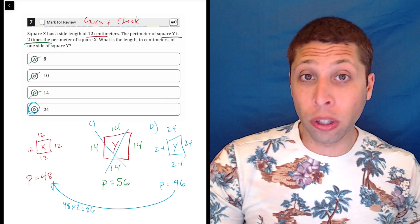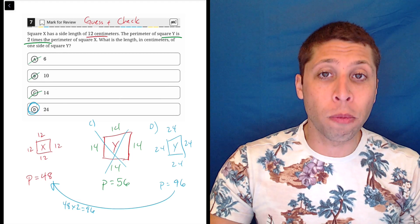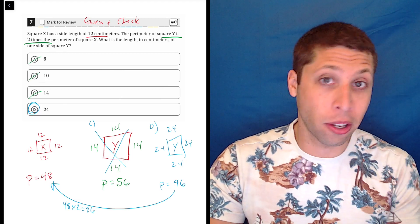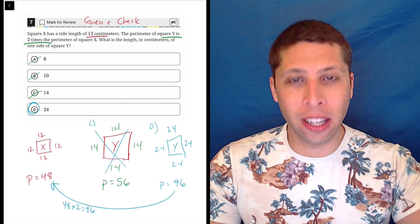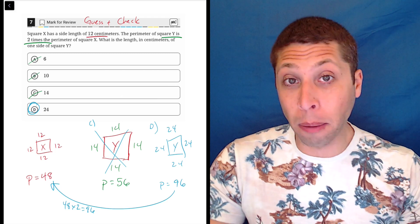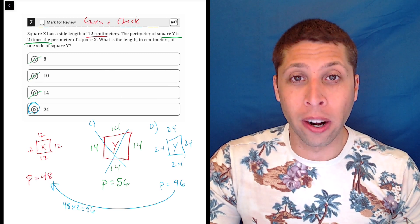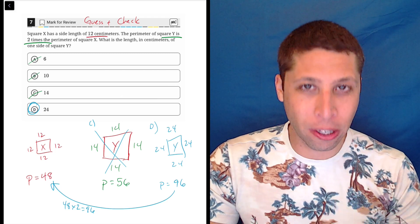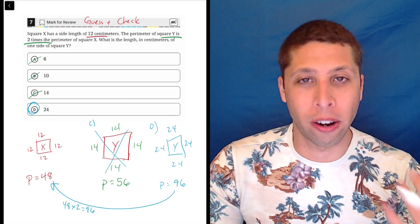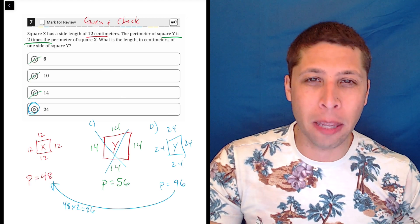Now, even if we didn't have answer choices, you could still guess and check here, right? If this is one of those student produce response questions, you just have to pick your own value. You might have a hunch of like, okay, what if I just doubled the side length and made it 24, but you know, test those things out and make sure it actually works by drawing the square on your scrap paper and actually seeing the perimeter.